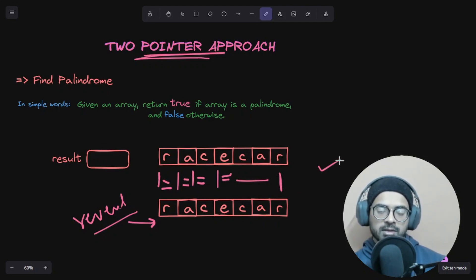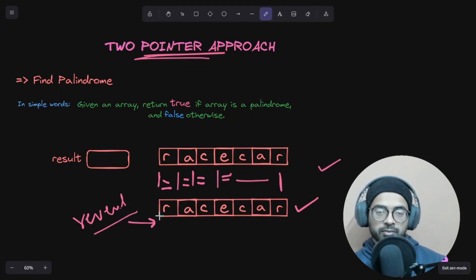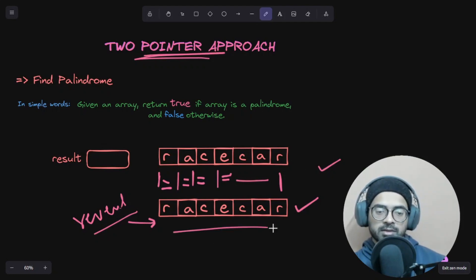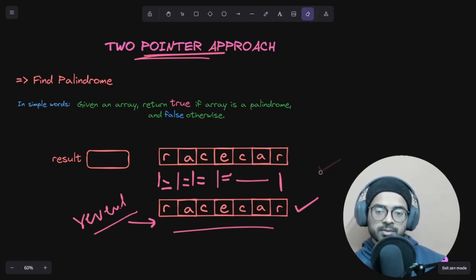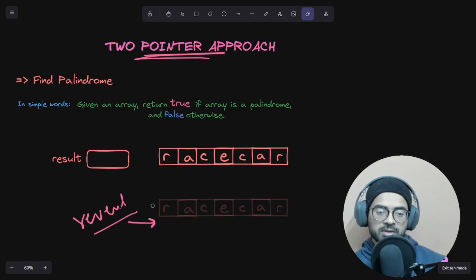But is this an optimized approach? No. First, we have to create another array, then reverse it, then compare both elements one by one. Why add this additional space if we can solve this question without any additional space by using the two-pointer approach? So let's see how two-pointer works — we can remove the reversed array.